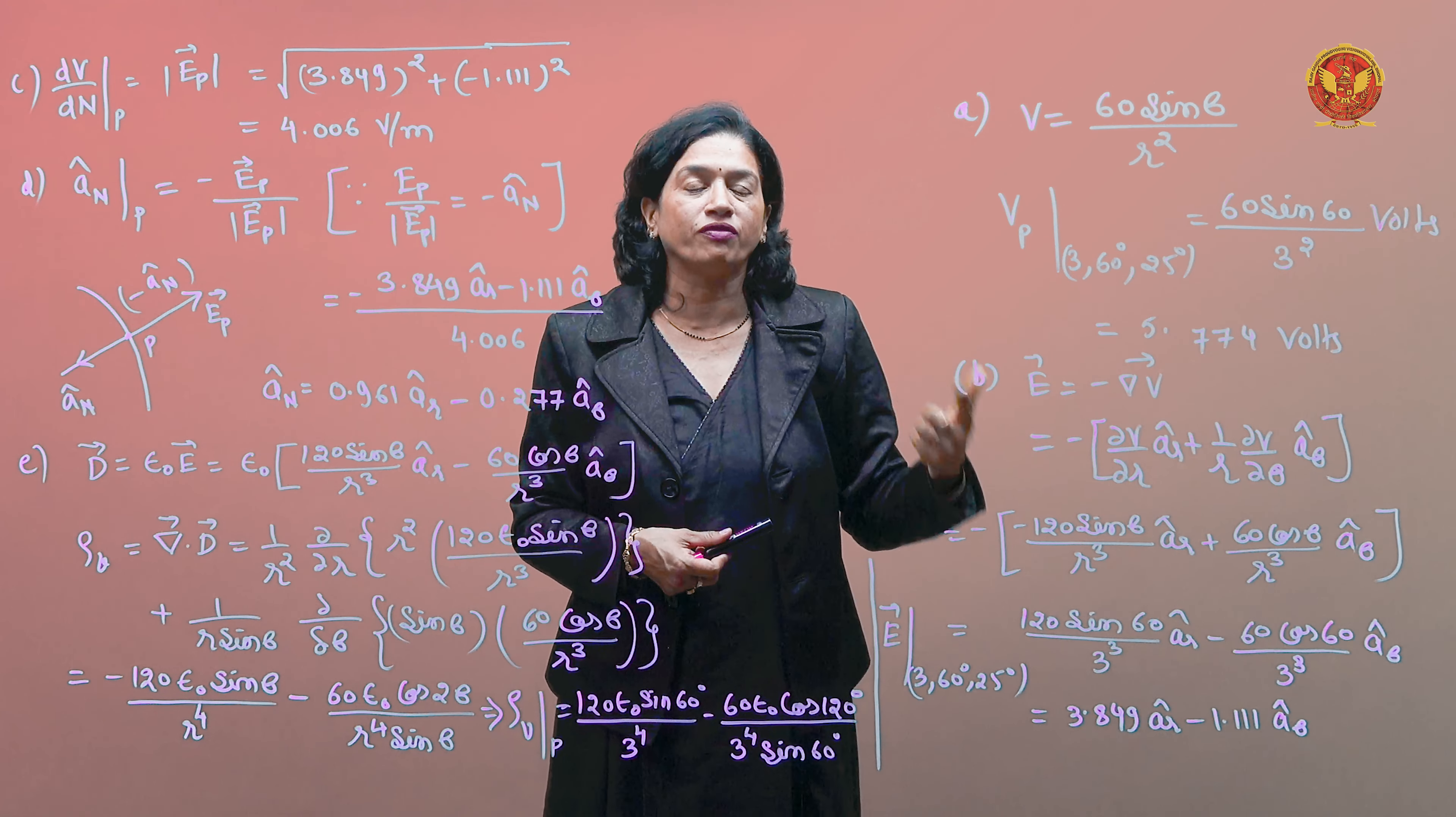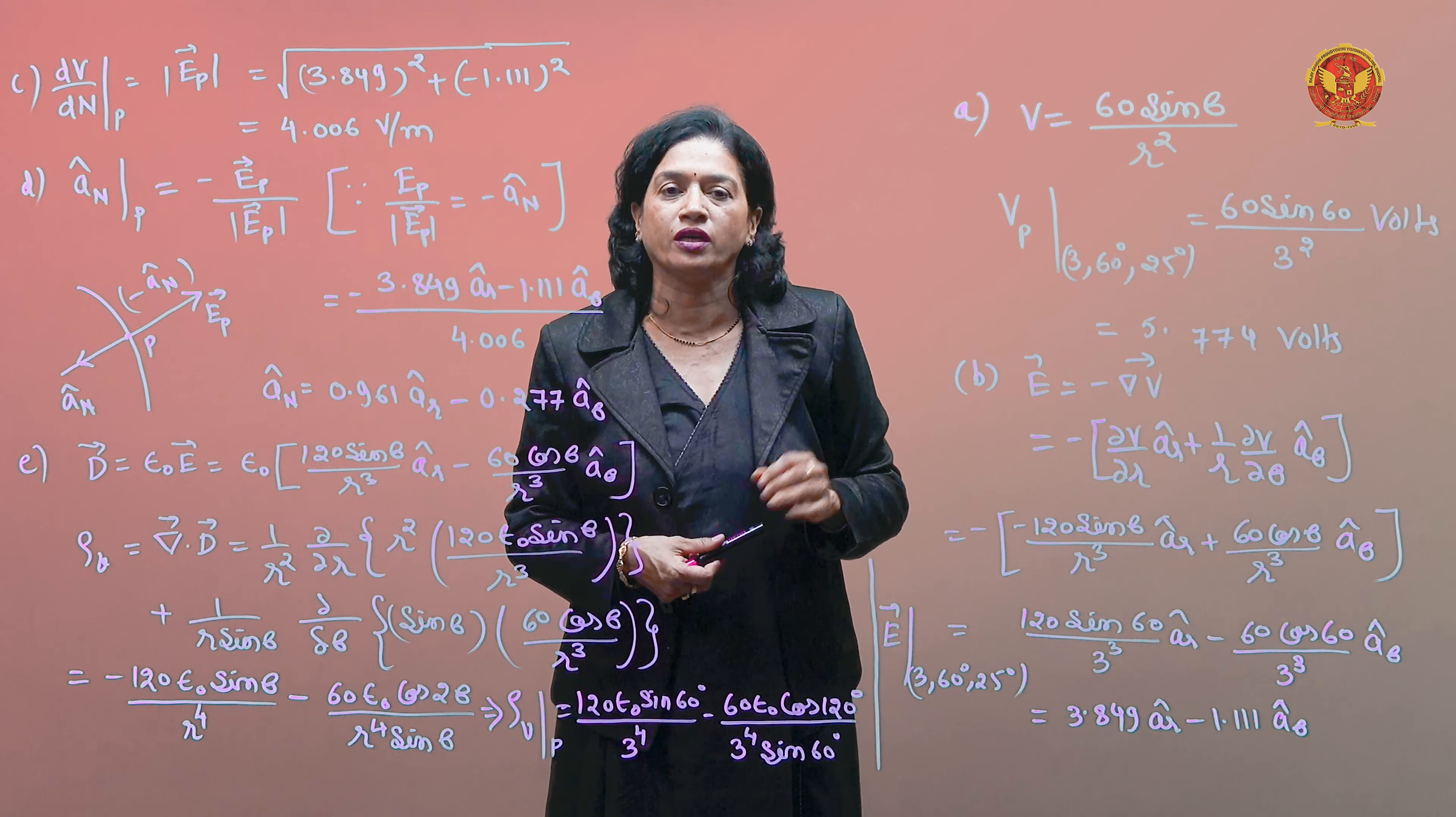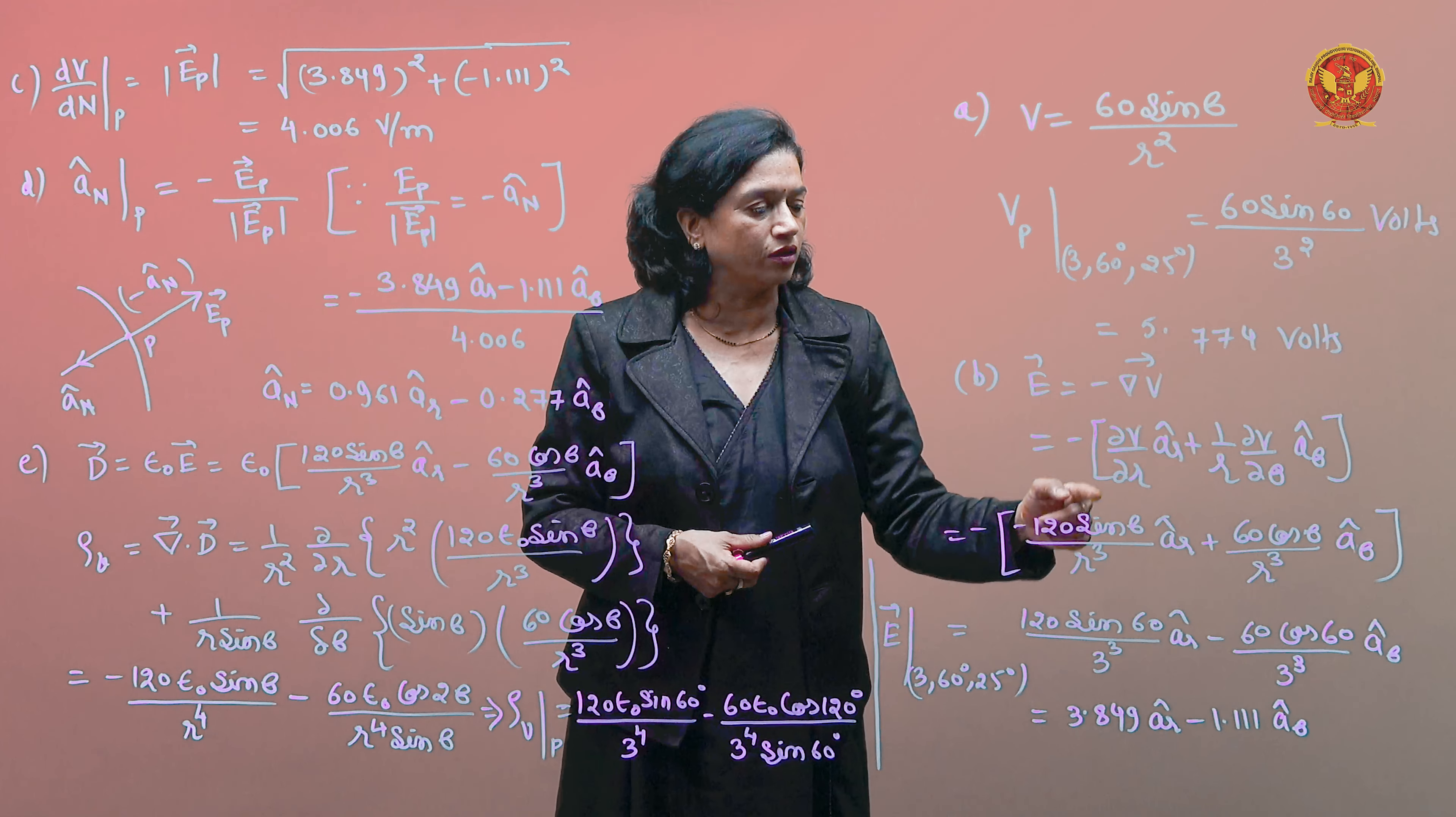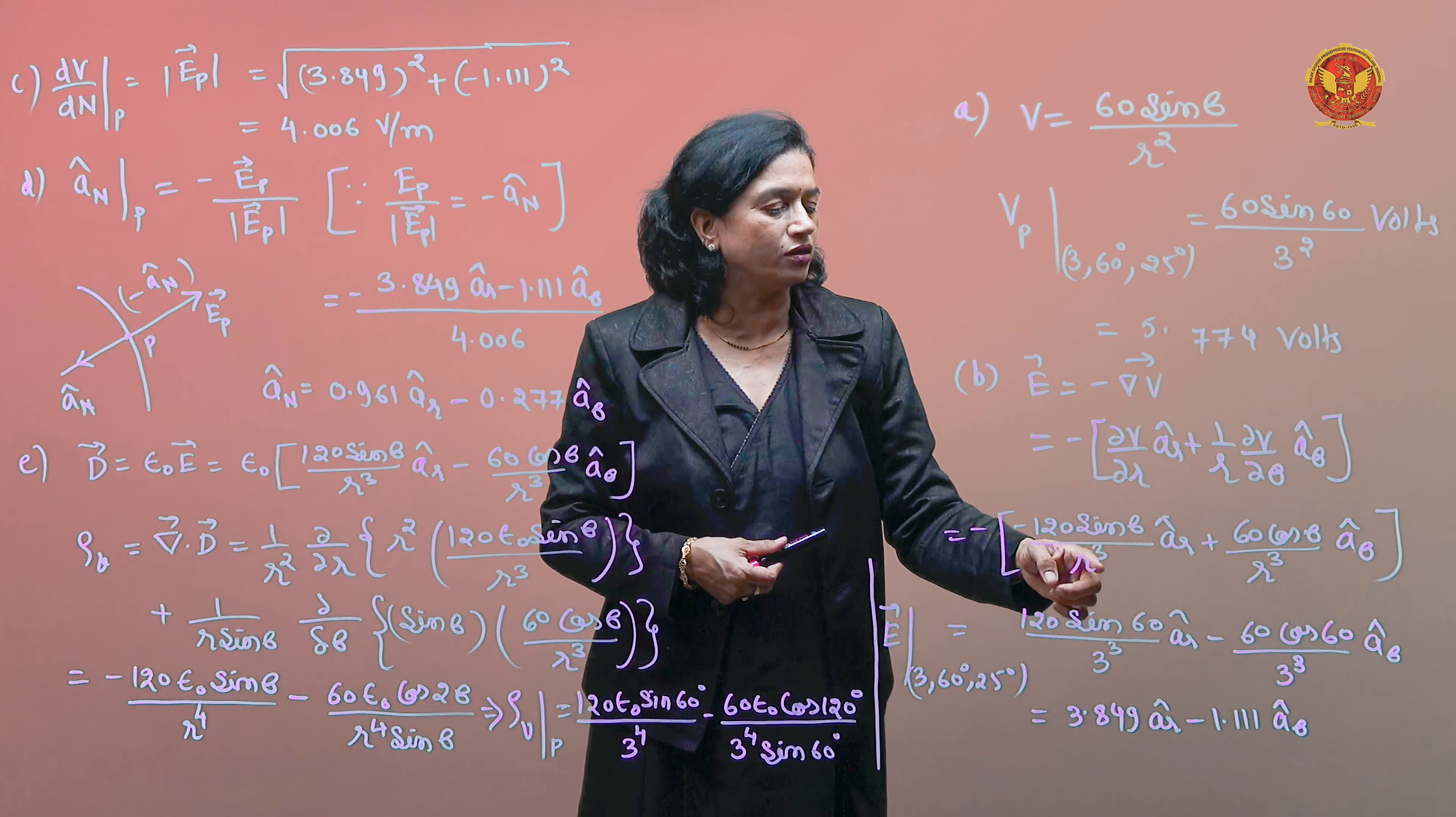Here we don't have del V by del phi because phi doesn't exist anywhere in V. So the third term will be 0. We can write del V by del r. So when we find del V by del r, it will be minus 120 sin theta upon r cube.